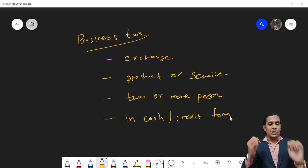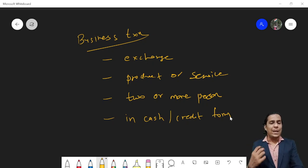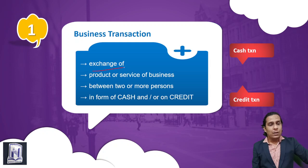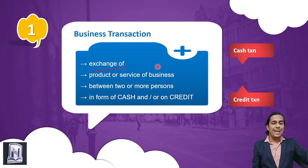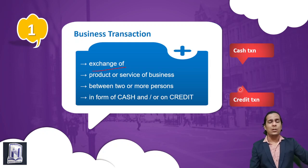So when you exchange a product or service, you either get money immediately — that is a cash transaction — or the buyer to whom you provide goods on credit, the amount will be payable by the customer in future — that is a credit transaction. So there are two types of transactions: cash transaction and credit transaction.